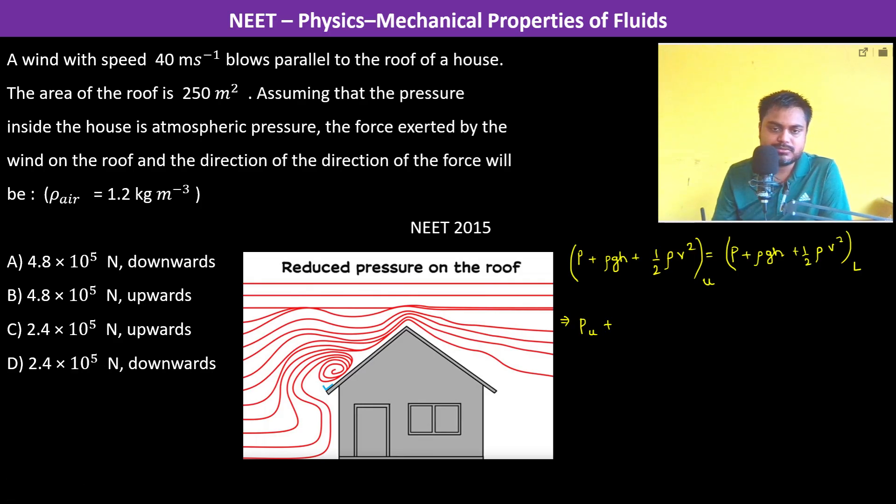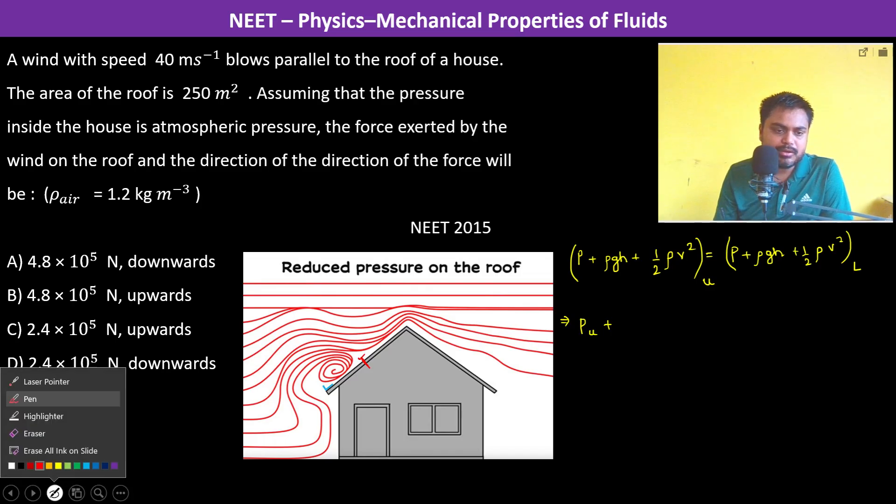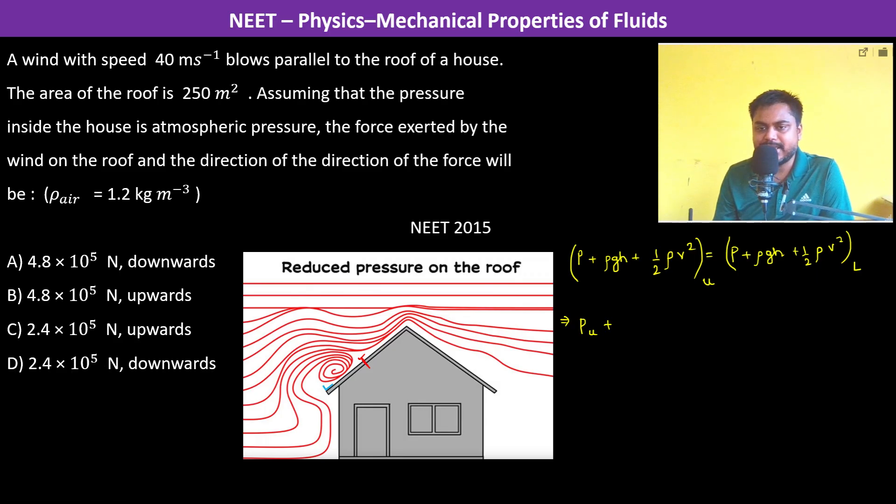This height difference is considered to be negligible because the roof is thin only, and so therefore this h remains the same. So therefore this and this is gone, plus half rho v squared.